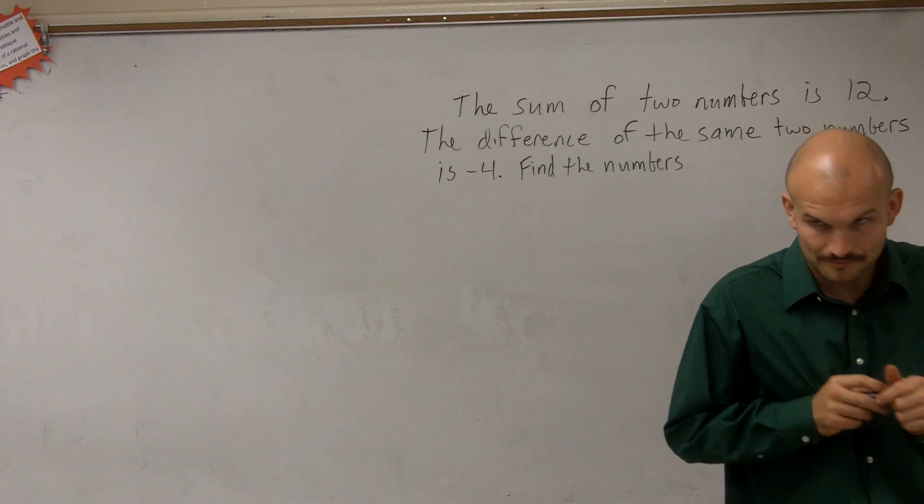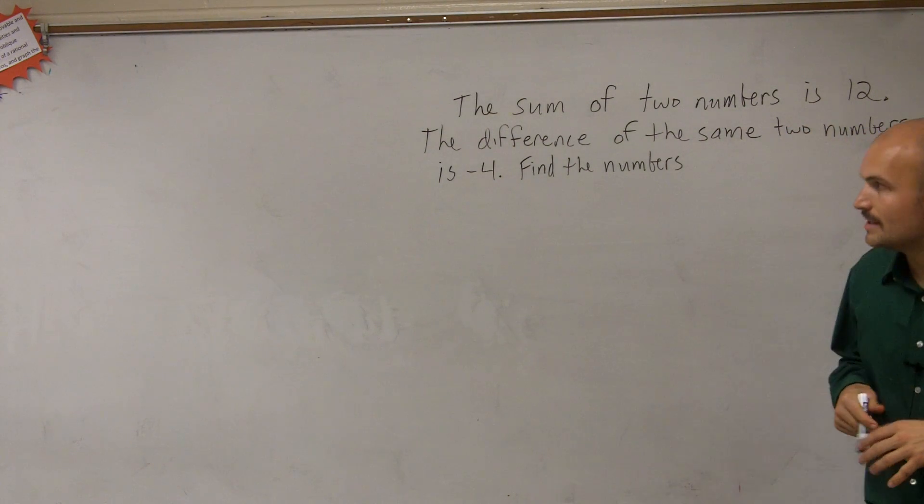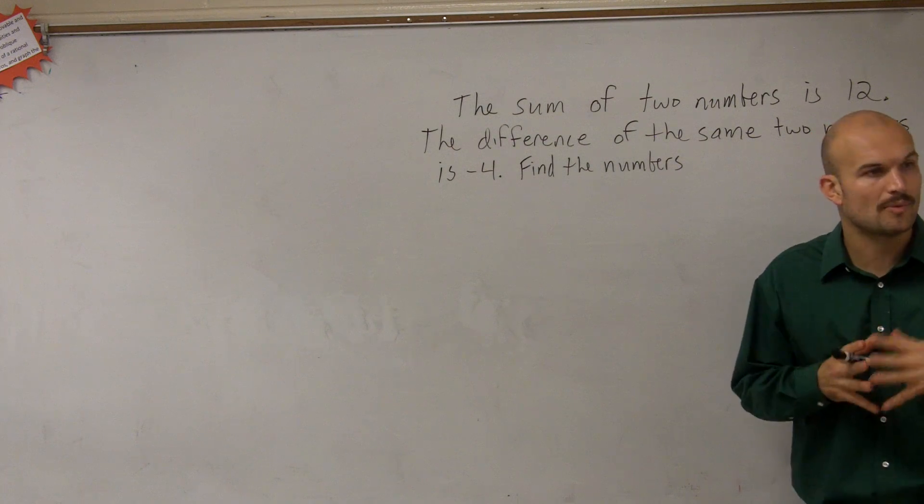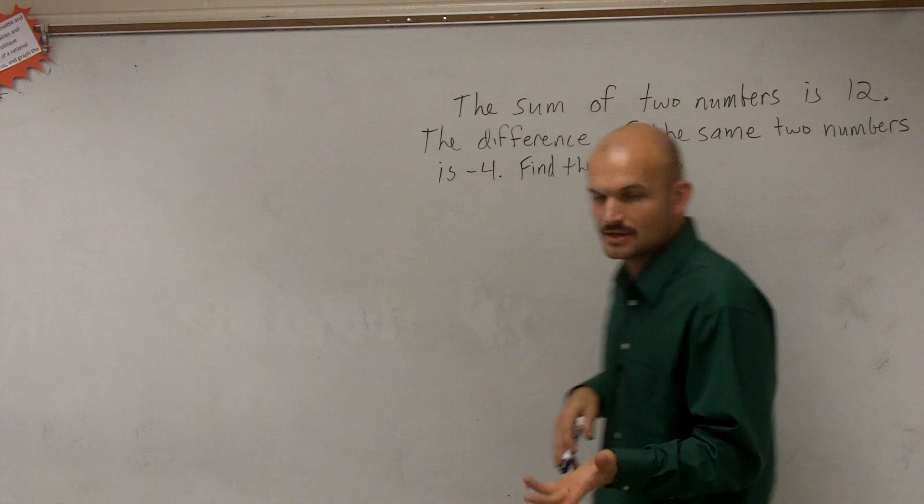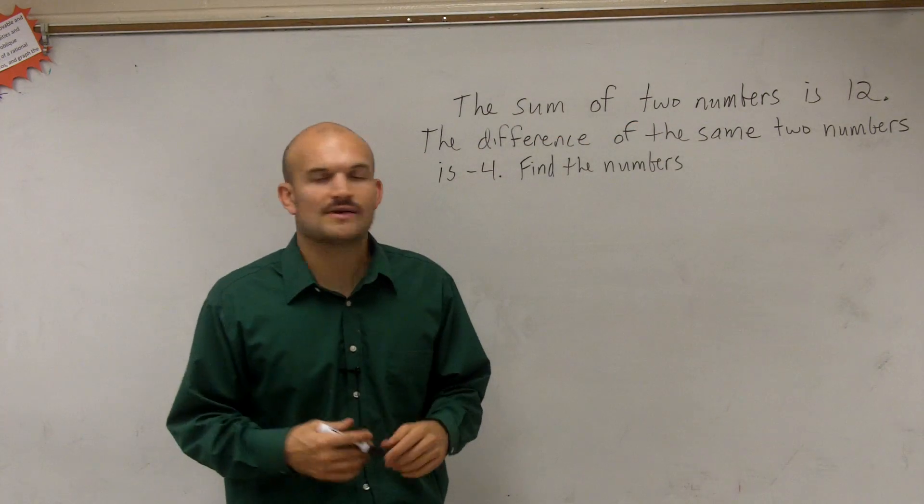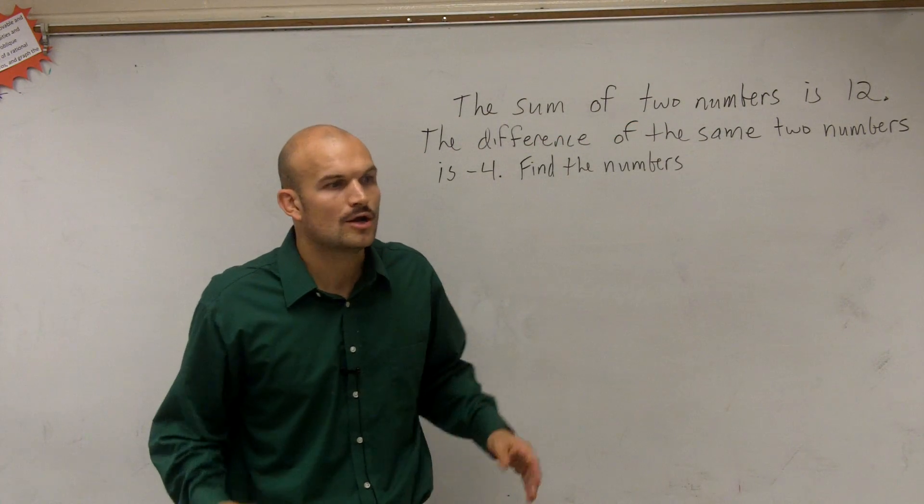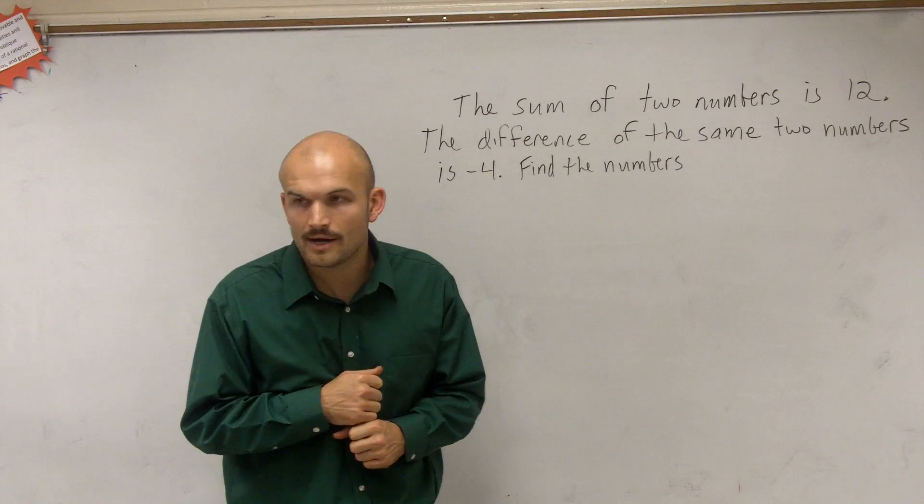So remember, what we're doing when doing a word problem is we always want to read through the word problem first. So it says the sum of two numbers is 12. The difference of the same two numbers is negative 4. Find the numbers. So the first thing I always like to do is rephrase the question and say, what are we trying to find?